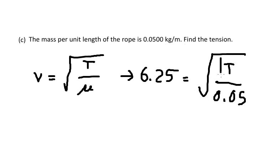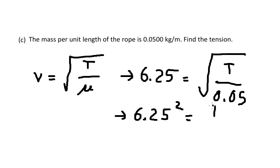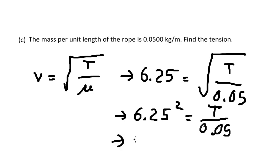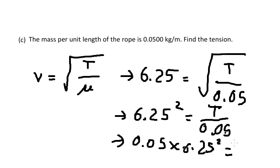To find T, we square both sides of the equation and rearrange to isolate T, the tension. Calculating this, we get T equals 1.95 newtons.